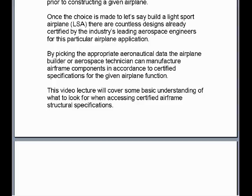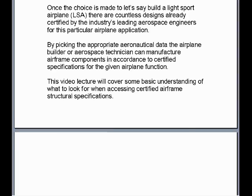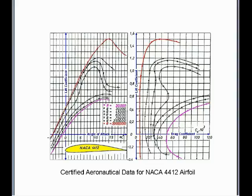This video lecture will cover some basic understanding of what to look for when accessing certified airframe structural specifications. We start first with the certified aeronautical data for a given airfoil. In this case, it is the NACA 4412 airfoil. And on this graph, the certified engineering specifications indicating the critical angle limits of the airfoil listed here from 0 to almost 20 degrees. The alpha symbol is the degrees. Then we have the Reynolds number limits based off the cord length. And then, of course, the angle translated to the coefficient of lift.